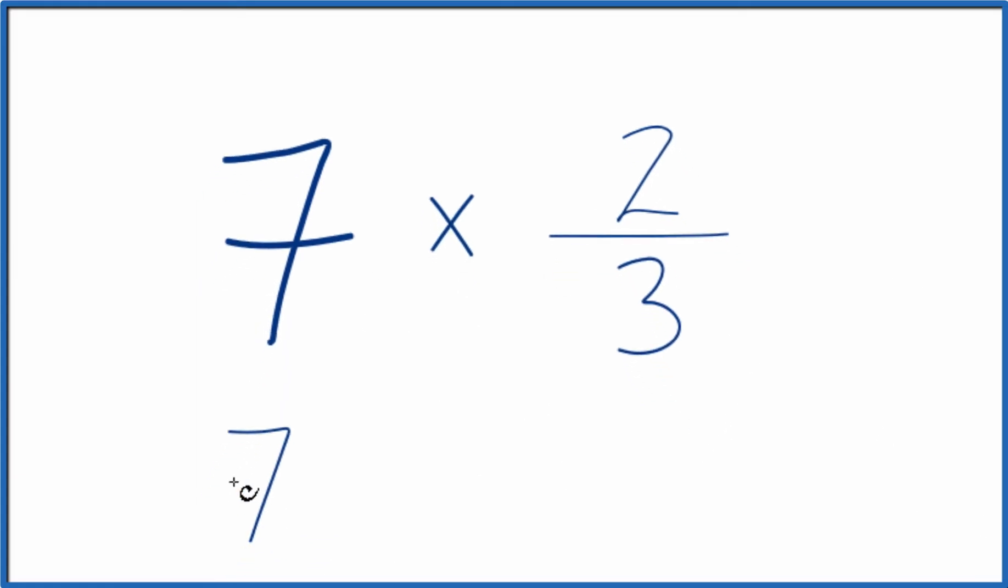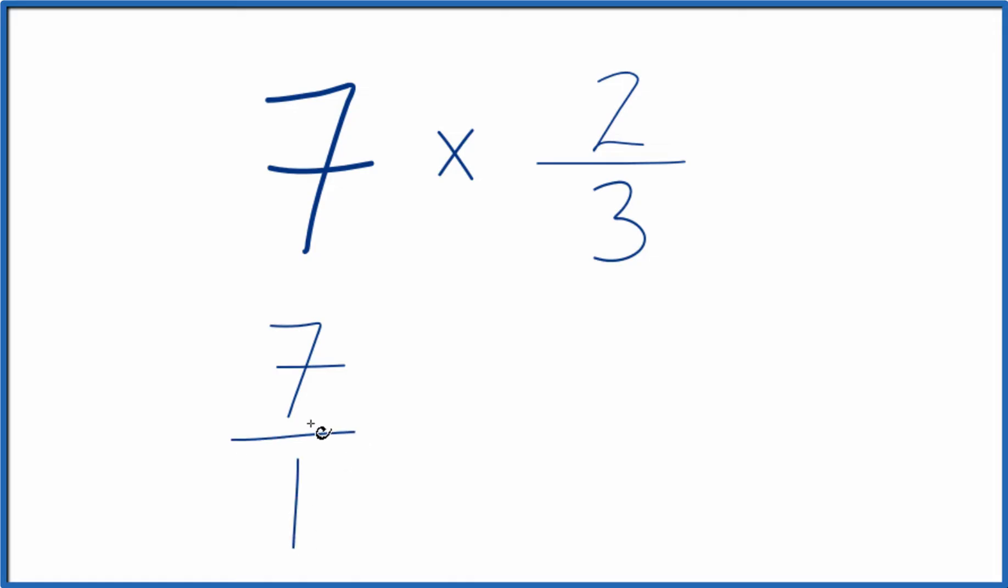Probably an easier way is to take 7 and consider this 7 over 1. It's still 7. We're just dividing by 1. Now we have a fraction. We can multiply that fraction times 2 thirds.